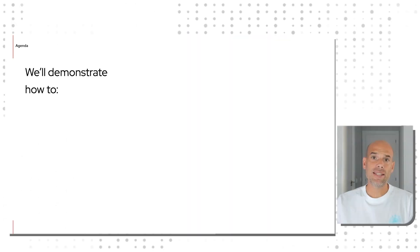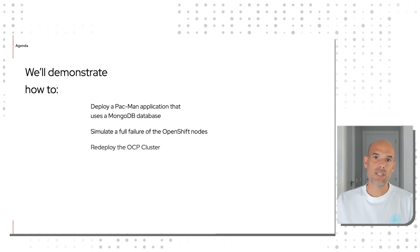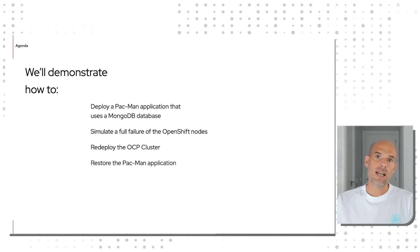The main goal of OADP is offering granular backups and restores for our OpenShift applications. In the demo we're going to show today, we're going to deploy a Pac-Man application that has a MongoDB database running for persistence. We will simulate a full failure of the OpenShift nodes, then redeploy our OCP cluster, and finally restore our Pac-Man application, checking that the persistence for our MongoDB database is still there and available after the restore.